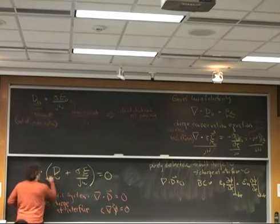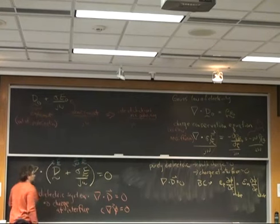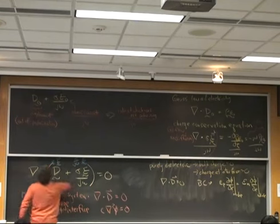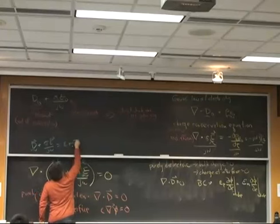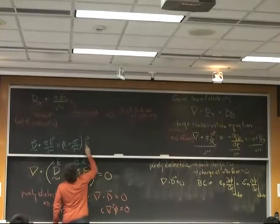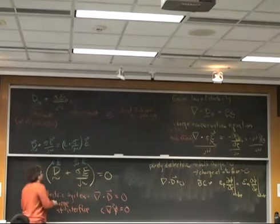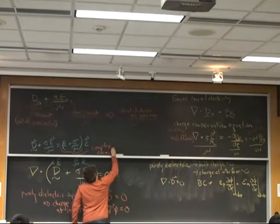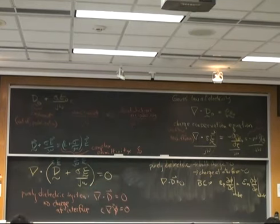So now I have an electric displacement that's given by epsilon times E. I have an ohmic current that's given by sigma over j omega times E. And that means that this whole thing is given by this expression. And this we call the complex permittivity. And we denote this epsilon with the squiggle underneath.